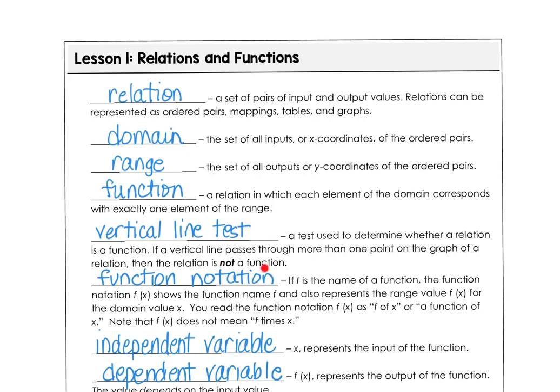We're going to learn to use function notation. That's the f of x symbol. And f is the name of the function. So f of x shows the function notation. It shows the name of the function f, and it also represents the range value, f of x. That's the y value for the domain when the x-coordinate is given. You read the function as f of x or as a function of x. Note that f of x doesn't mean f times x.